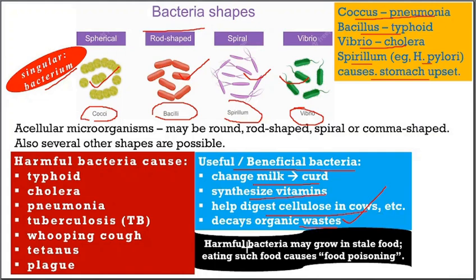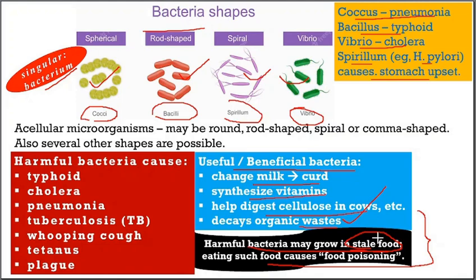Harmful bacteria may grow in stale food — food that was prepared some time back and not preserved properly, such as not being kept in a fridge. If food is not preserved properly, harmful bacteria will grow, and eating such food may cause food poisoning.